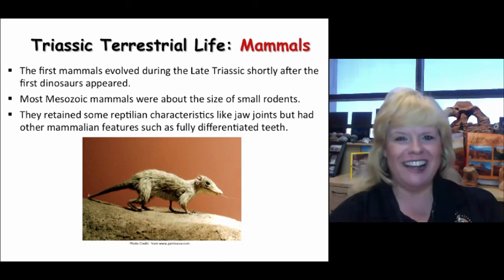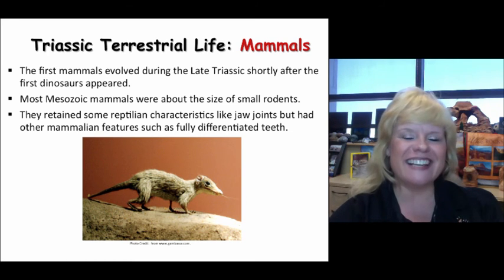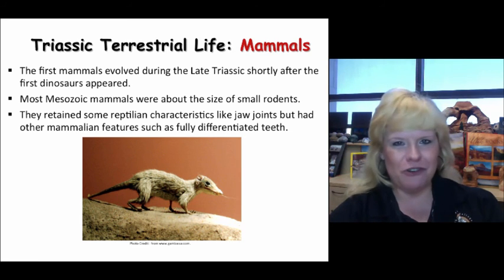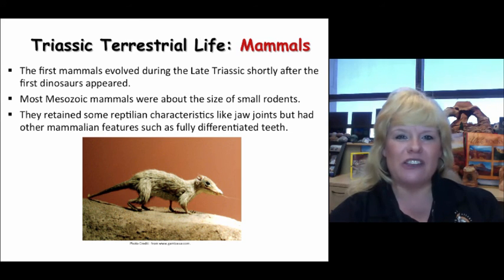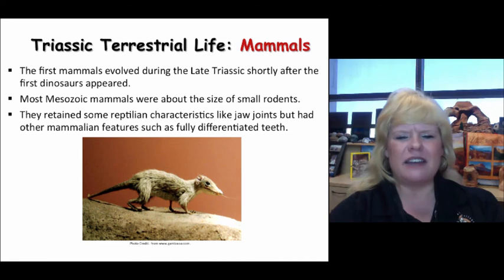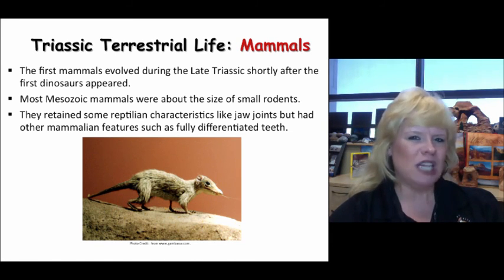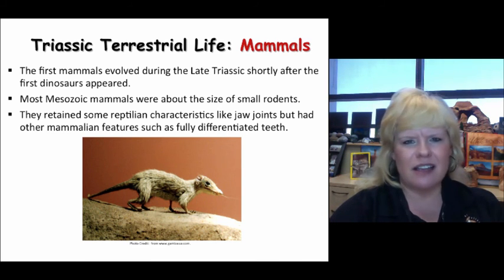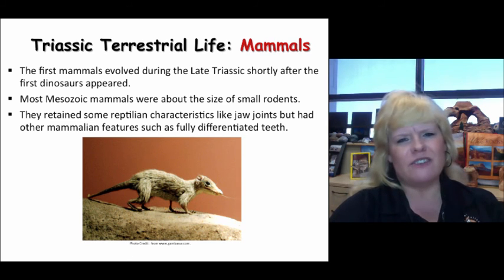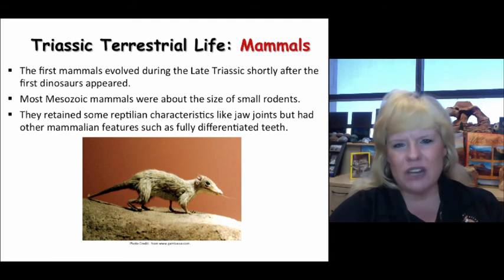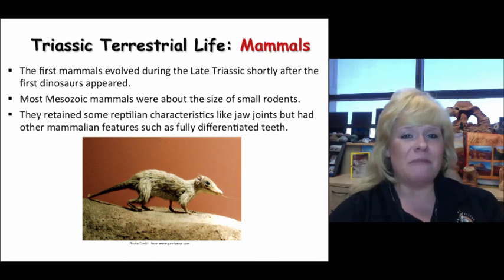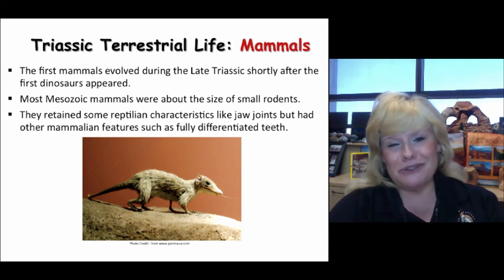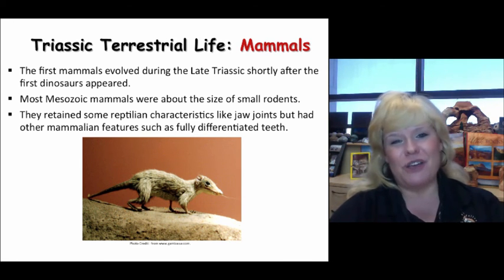Mammals evolved during the Triassic period — specifically the late Triassic — and their roots come from cynodonts. They appeared shortly after the first dinosaurs. Early mammals were fairly small, some getting to the size of small rodents. Throughout the Mesozoic they got a little bigger, up to the size of a wolf, but most stayed pretty small. They retained some reptilian characteristics from their cynodont ancestors but had fully differentiated teeth, making them unique. Mammals survived the mass extinction events at the end of both the Triassic and the Cretaceous — they took a hard hit but overcame those challenges and filled the empty niches.